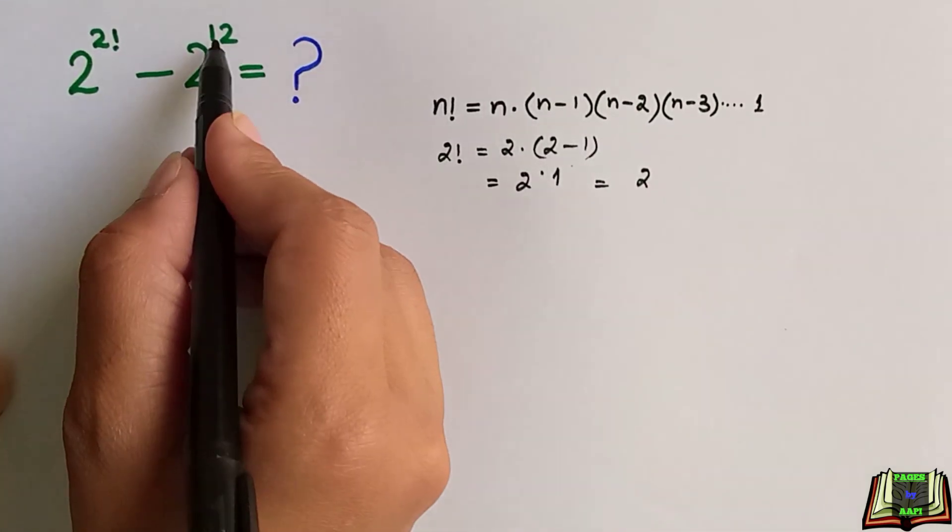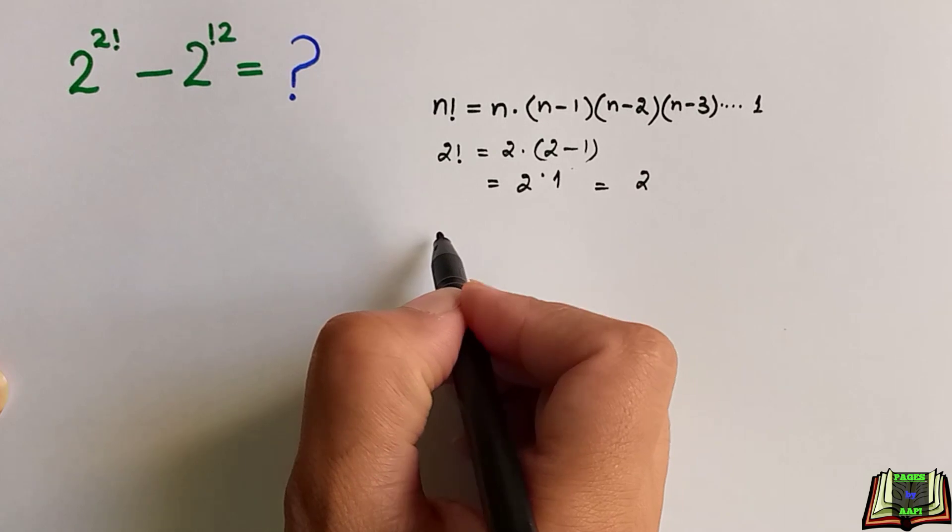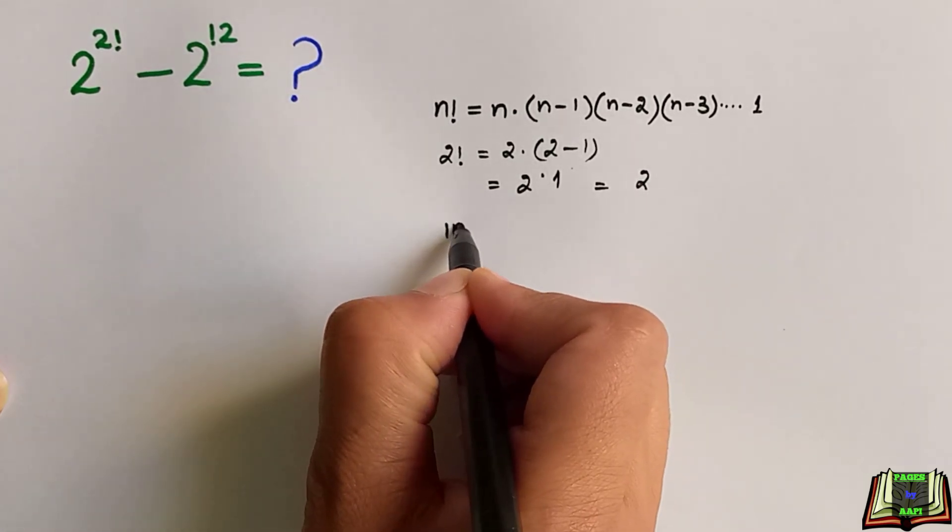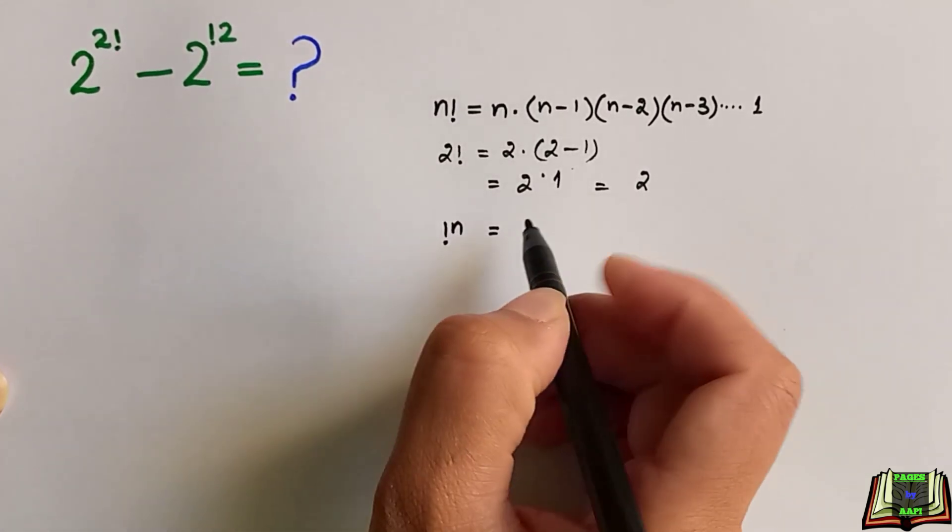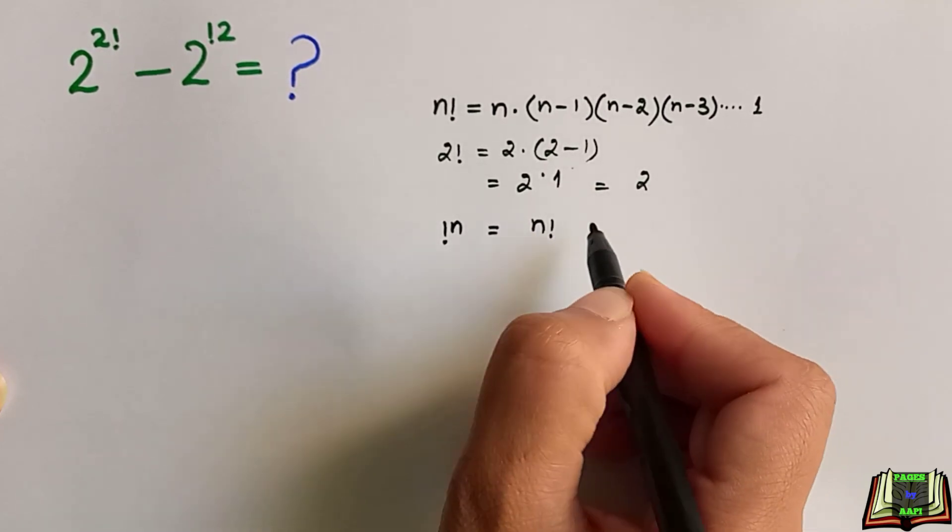Now we have to find the other exponent, that is subfactorial of 2 or left factorial of 2. For that, we have to revise the formula of left factorial or subfactorial.